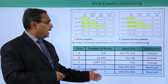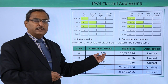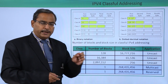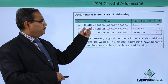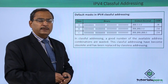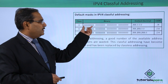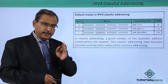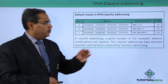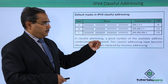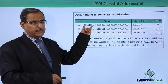Remember this table: number of blocks and block size in classful IP addressing. Number of blocks means how many net IDs exist; block size means how many nodes per net ID. For Class A, the first 8 bits denote the net ID, so the subnet mask is 255.0.0.0 — bits denoting the net ID are set to 1 and bits denoting the host ID are set to 0. This is also expressed as slash 8 notation, meaning the first 8 bits denote the net ID.